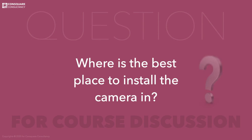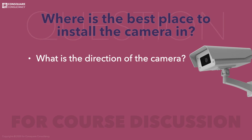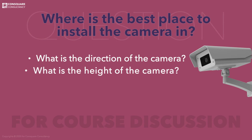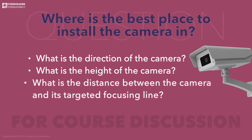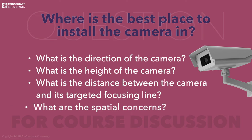Where is the best place to install the camera? This is a complicated question, so it is broken into partial questions: What is the direction of the camera? What is the height of the camera? What is the distance between the camera and its targeted focusing line? And what are the spatial concerns?